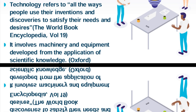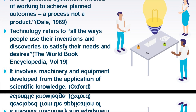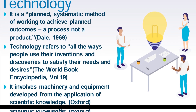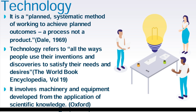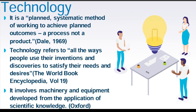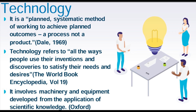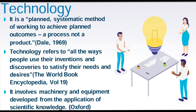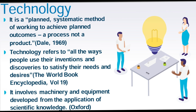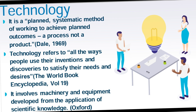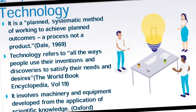Technology, in its broadest sense, refers to the application of scientific knowledge to solve practical problems. It is not a mere product, but a systematic process aimed at achieving specific outcomes. The term was defined by Dale in 1969 as a planned, systematic method of working to achieve planned outcomes. This definition highlights that technology involves a structured approach to utilizing various tools, machines, and systems to enhance efficiency and productivity. In the context of teaching and learning, technology refers to all the methods, systems, and tools that educators can employ to facilitate better learning experiences and outcomes.